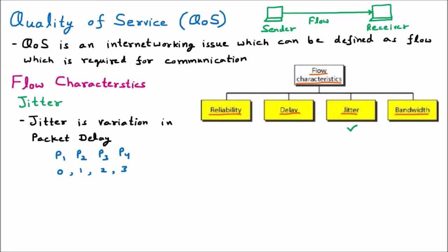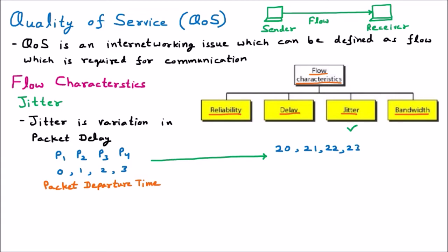From source to destination, these packets arrive. The packet arrival times for P1, P2, P3, and P4 are 20, 21, 22, and 23. The packet that started at 0 reached at 20 — difference is 20. Started at 1, reached at 21 — difference is 20. Started at 2, reached at 22 — difference is 20. Started at 3, reached at 23 — difference is 20. So the delay is the same: 20 for all packets.